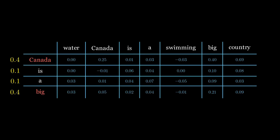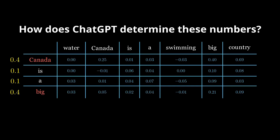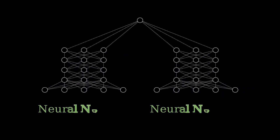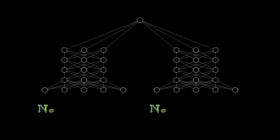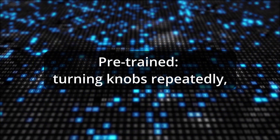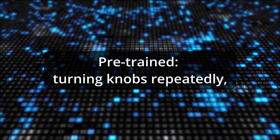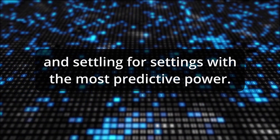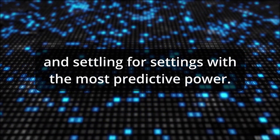We've left open the question of how ChatGPT determines these numbers. ChatGPT has neural networks, which you can think of as machines with billions of knobs. By turning these knobs, you change the numbers. So 'pre-trained' simply means turning these knobs repeatedly and settling for the knob settings that give you the most predictive power.